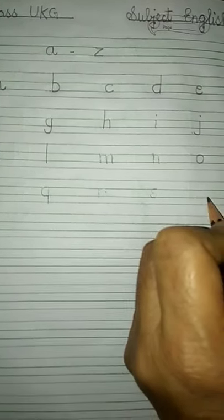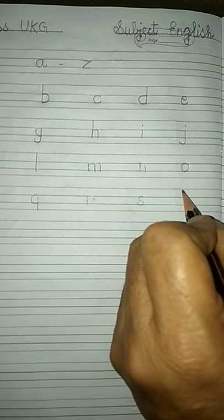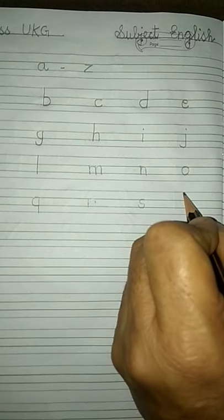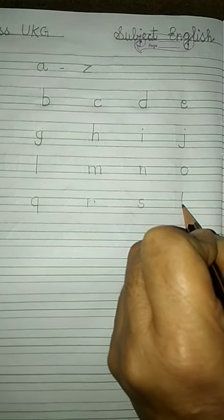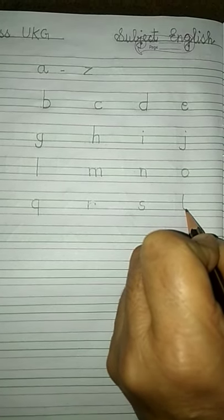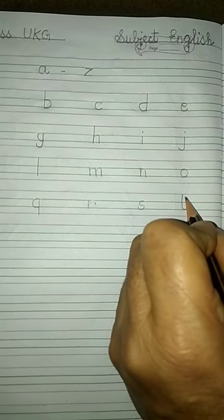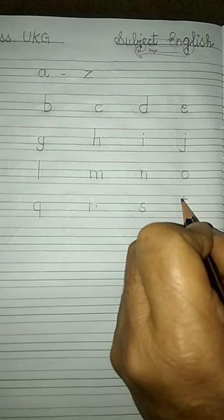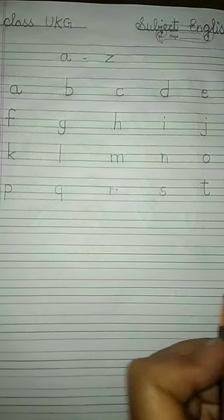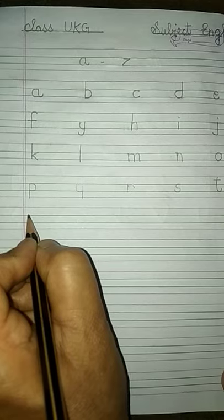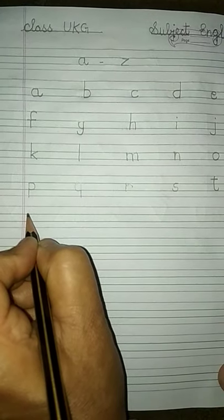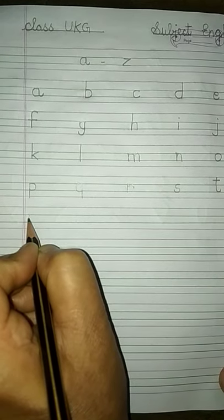Now T — one standing line from the red line to the second blue line and a small curve, and one slipping line from the red line to the first blue line: T. Now U — one standing line in between the two blue lines, one small curve and go upward: U.